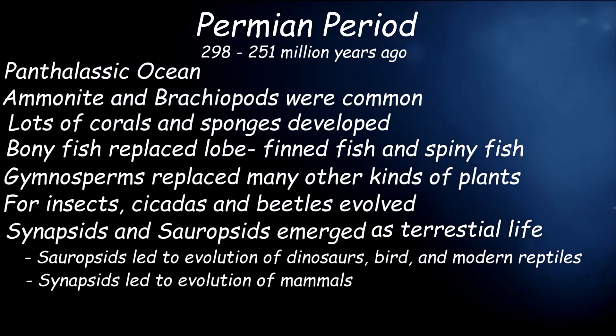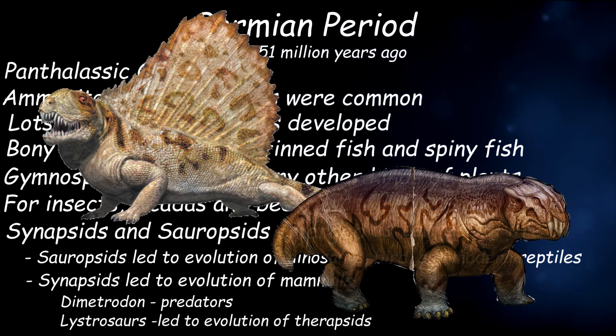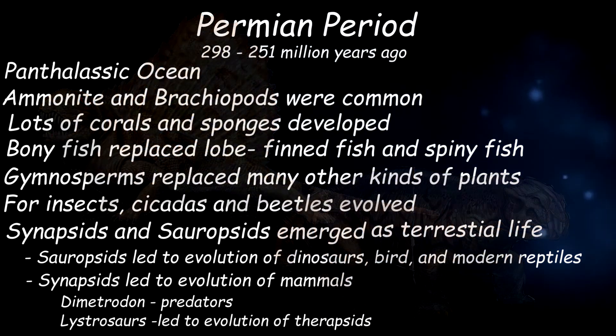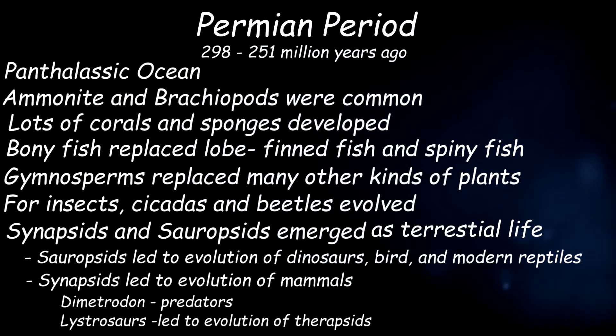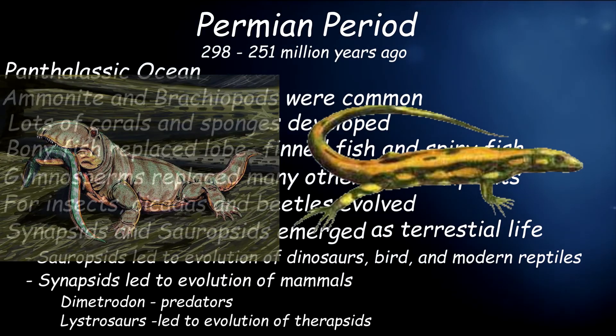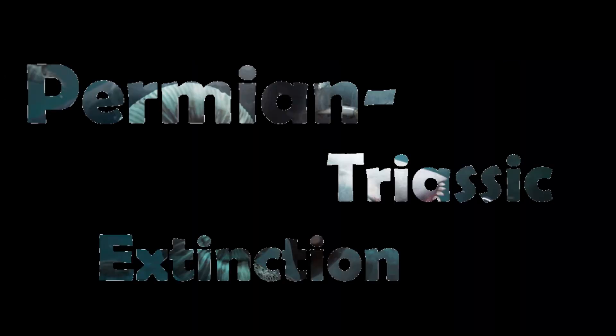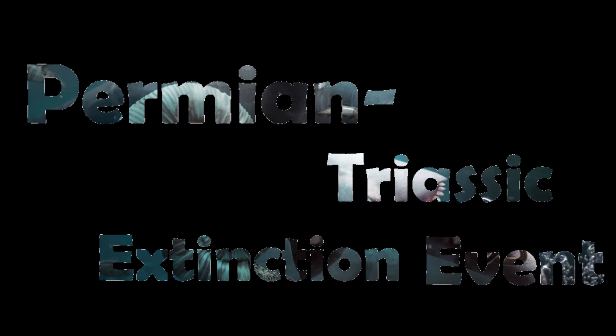Synapsids had skulls with a temporal opening and are believed to have led to the evolution of mammals. Synapsids also had two big genus groups: one was the Dimetrodon, which were predators, and the second were the Dicynodonts. The Therapsids evolved from Dicynodonts. Then the infamous Permian-Triassic extinction event happened, killing off nearly all life — about 95%. Most of the synapsids became extinct while the sauropsids survived, giving rise to dinosaurs. No one knows the exact cause, but some theorize it was volcanoes erupting, a rise in CO2 levels, acid rain, or even an asteroid.